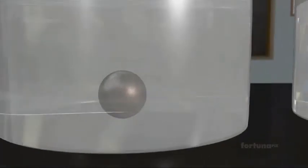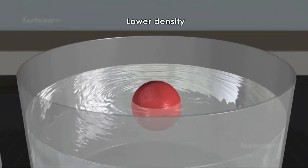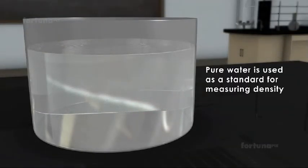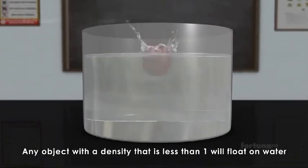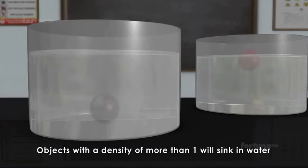If we dropped both into a large trough filled with water, the iron ball will sink because of its higher density, while the rubber ball will float because of its lower density. Pure water is used as a standard for measuring density and in its liquid state is measured as one gram per cubic centimeter. Any object with a density that is less than one will float on water.